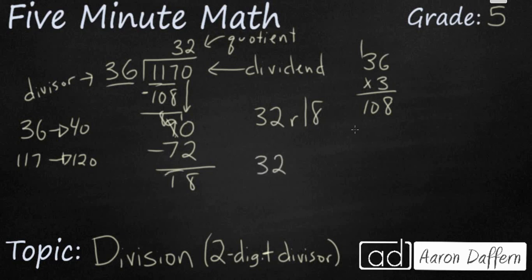Or you can write your answer as a mixed number. Your remainder is your numerator. And your denominator is your divisor because you're dividing by 36. And if you can go ahead and simplify that, 32 stays the same. But 18 is half of 36. So it looks like it's 32 and a half.